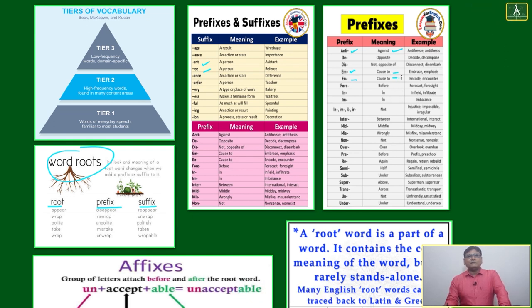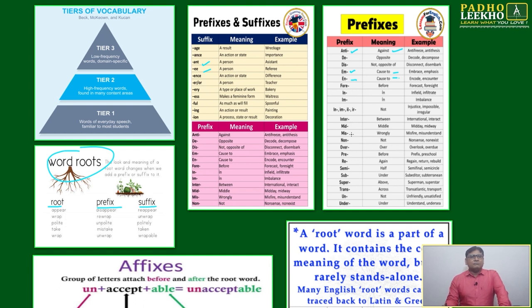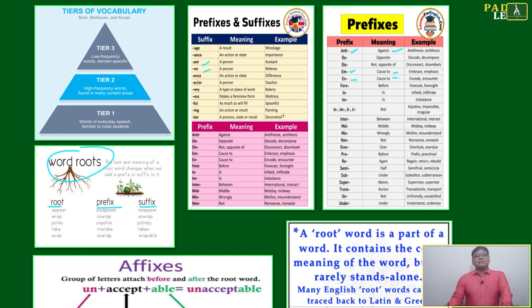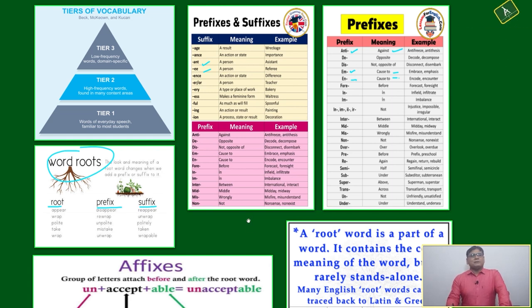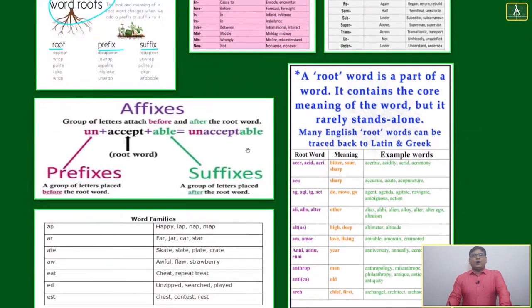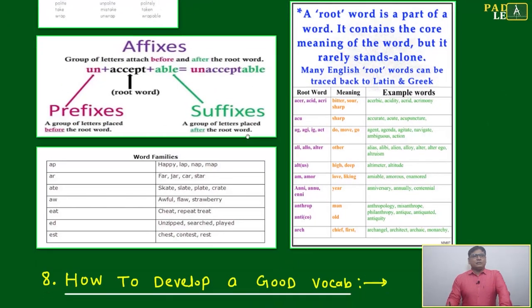If you are putting 'en', then words like 'encode' come. After that, many prefixes like 'inter' and others we will discuss. I am just giving you one simple idea of how prefix, suffix, and root are playing a role in developing vocabulary.